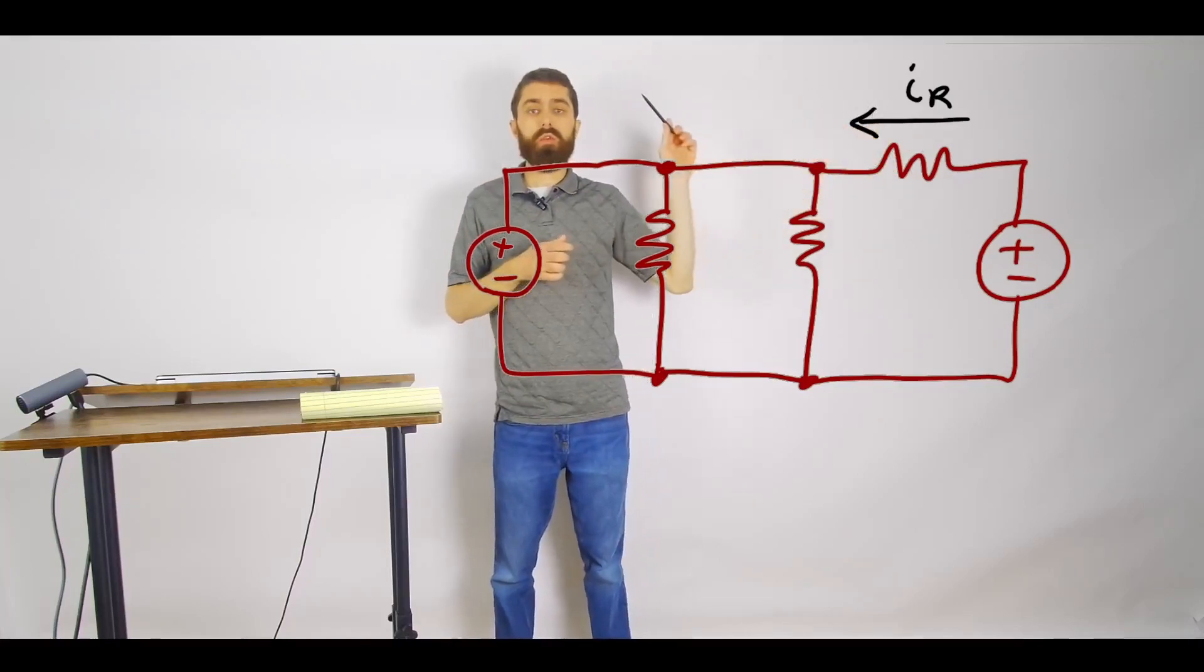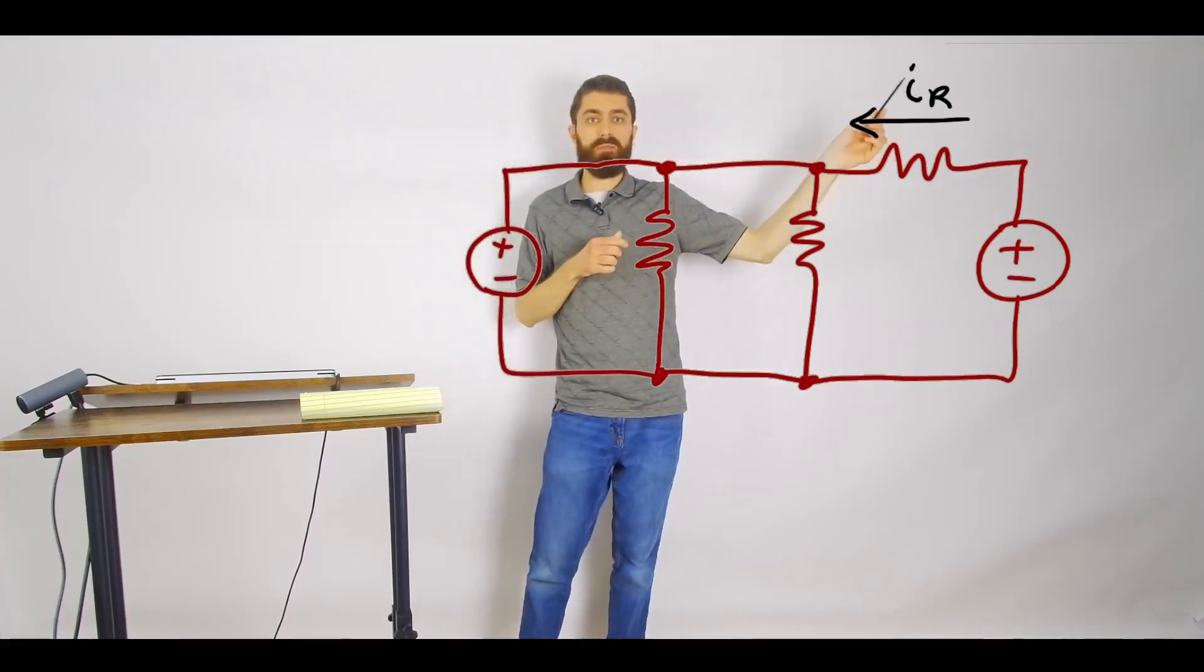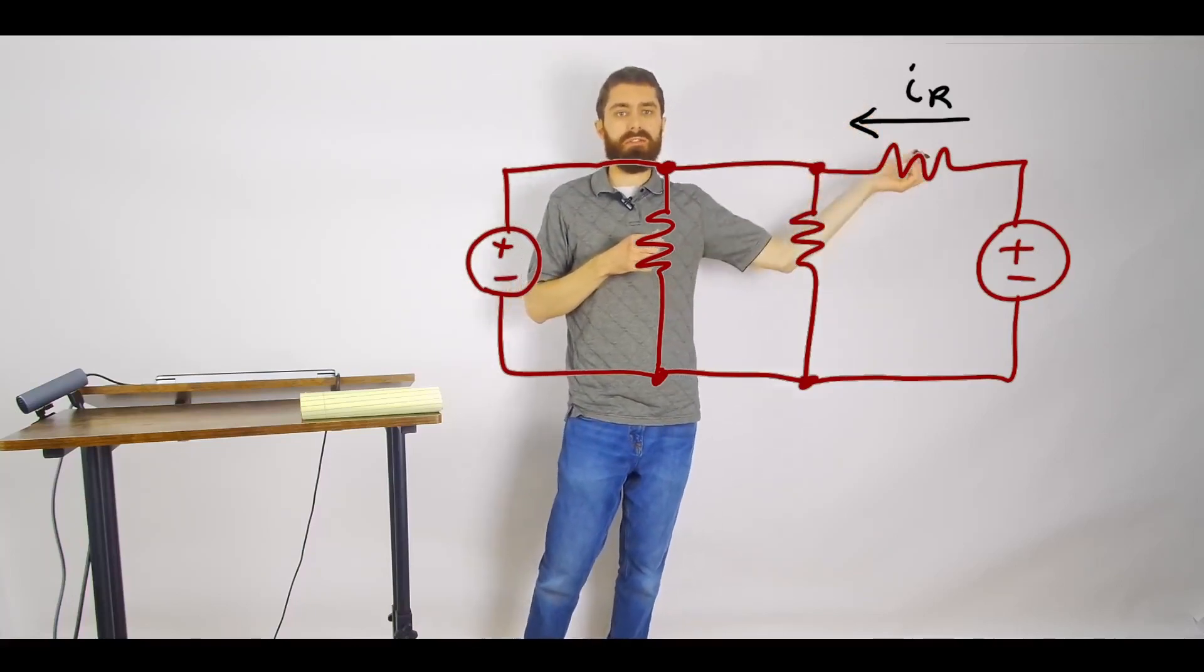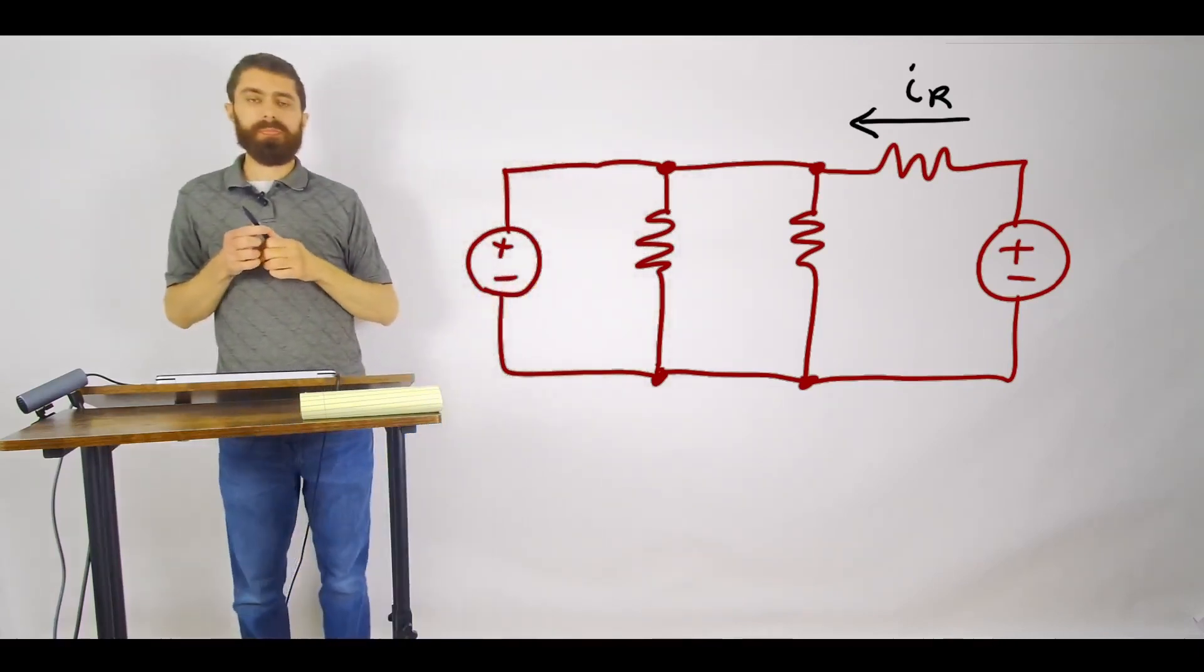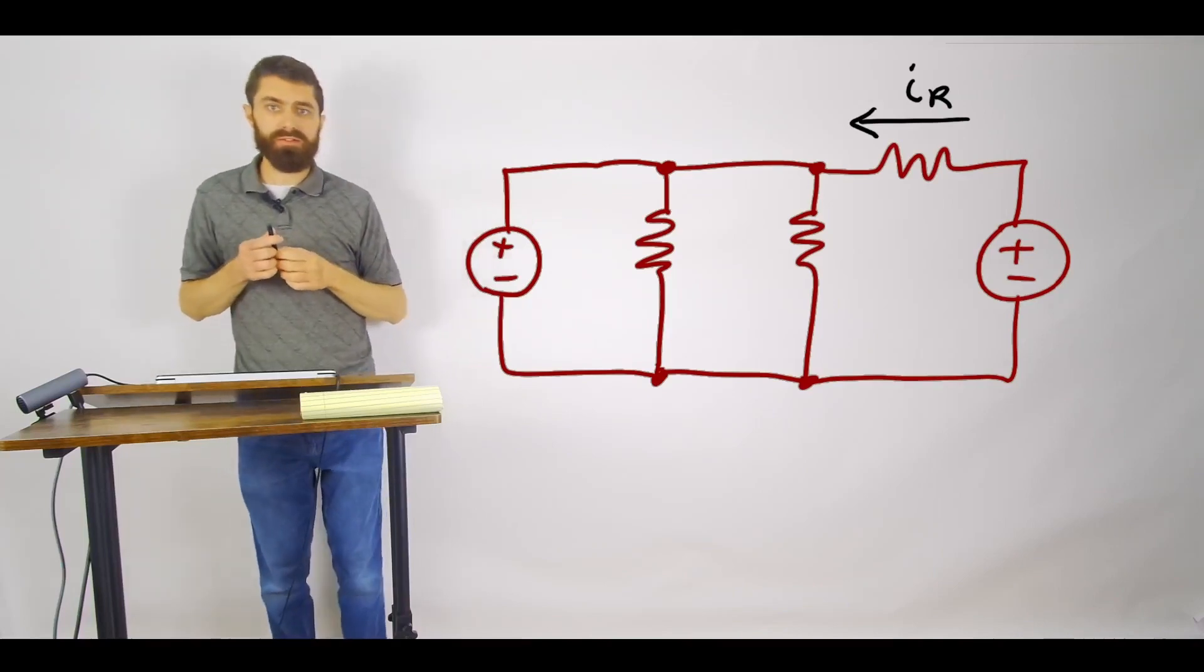But when you actually go through your math and you discover if the answer comes out negative, then you know that it's actually flowing the other direction. So that's kind of how signs work in circuits.